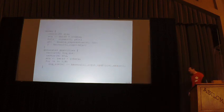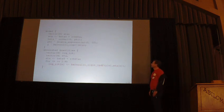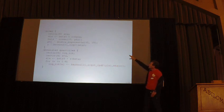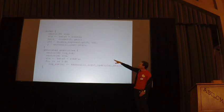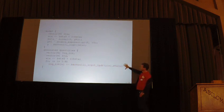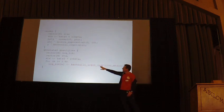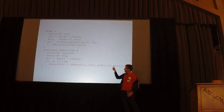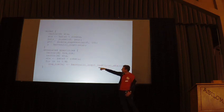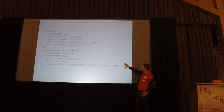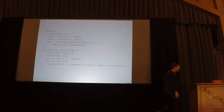Here's an example of Stan code — a simple Bernoulli model. Looking at the model block, the last line is y distributed as Bernoulli_logit of the alpha parameter. In generated quantities we compute the log-likelihood terms. We need to loop because Bernoulli_logit_lpmf, when given a vector of observations, sums the log densities — so we loop to get individual values. Rather than computing the density or likelihood directly, we compute the log-likelihood terms.